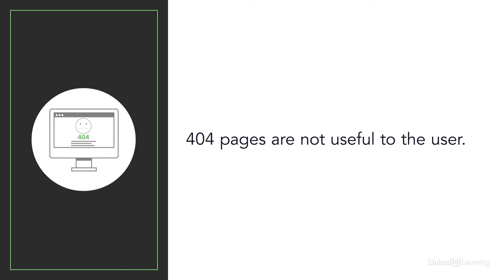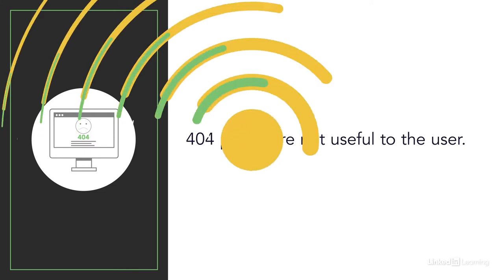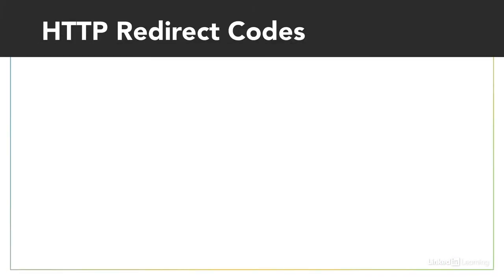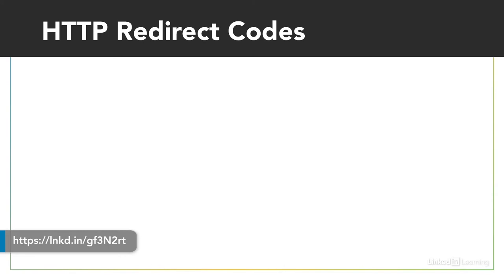A 404 tells us nothing about why that thing doesn't exist — whether it was moved, removed, never existed, or if the URL was simply wrong. It just says not found. We can do a lot better. Using HTTP status codes, you can instruct browsers and search engines to temporarily or permanently redirect the request to a resource that has been moved. This is done using codes in the 300 range.